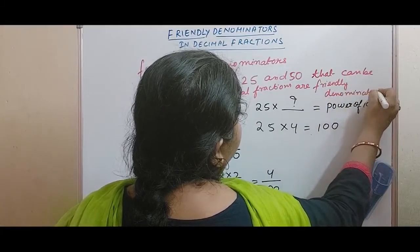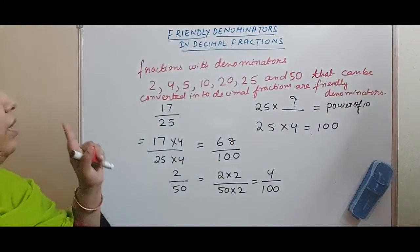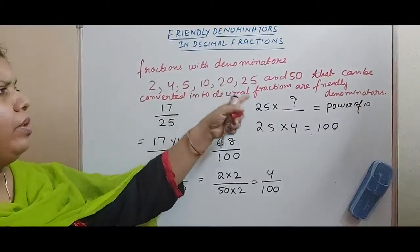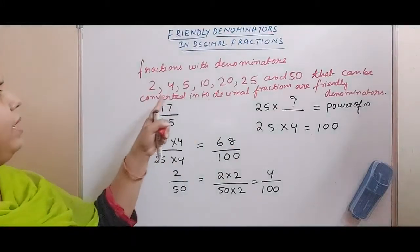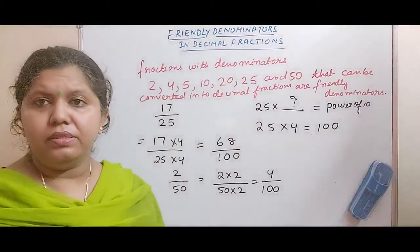I hope this is clear to everyone. Fractions with denominators 2, 4, 5, 10, 20, 25 and 50 that can be converted into decimal fractions are friendly denominators.